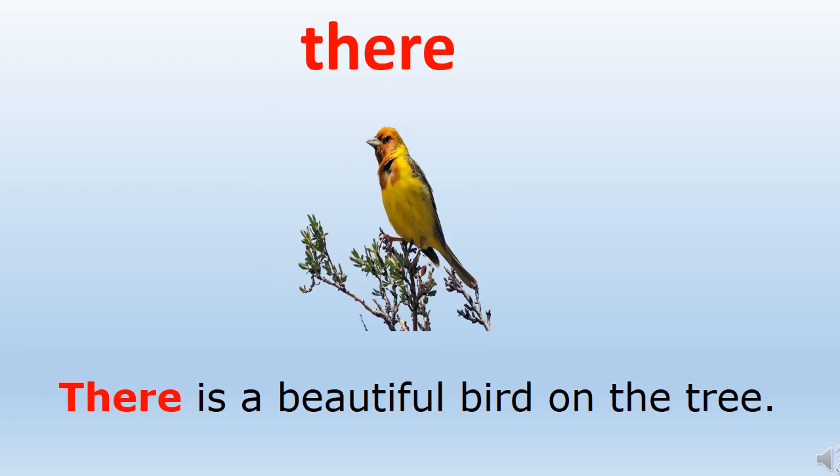The word is there. Now children, generally we use this word when we want to point out something at a particular place. It represents something at a particular place. Like we have used this word in the sentence: there is a beautiful bird on the tree. You can see in the picture one bird is sitting on the branch of the tree. We can also use this word like: he went there last year — for example, if I am talking about some place, I would say I went there last year.